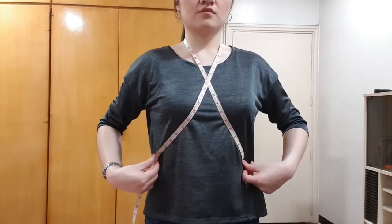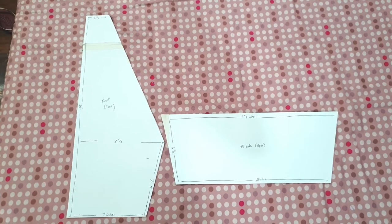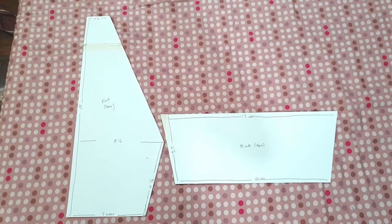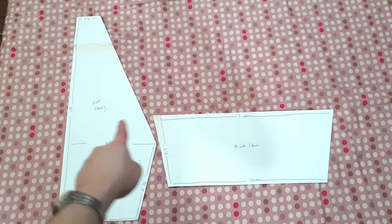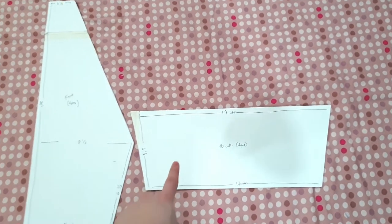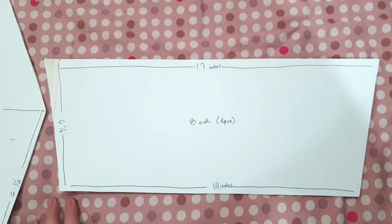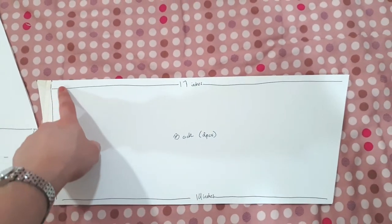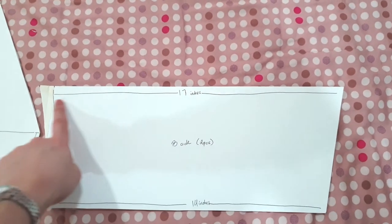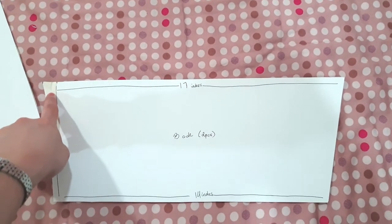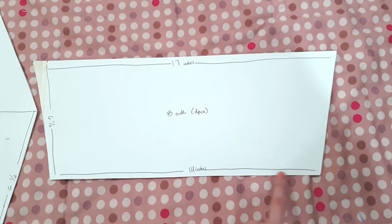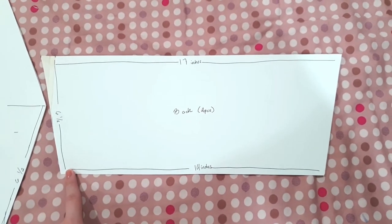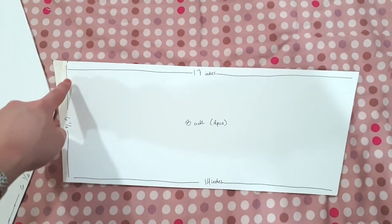Now for your bust and waist measurements, you want to divide them into two: one for the front piece and one for the back piece. Let's start with the back piece. Over here we have 17 inches, which is half of my bust measurement. Then over here we have 14 inches, which is half of my waist measurement. Now, the six and a half inches is the distance between my bust and my waist.